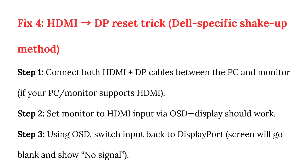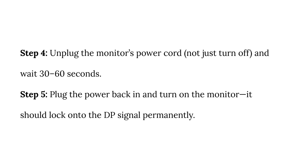The screen will go blank and show no signal. Step four: unplug the monitor's power cord — not just turn off — and wait 30 to 60 seconds. Step five: plug the power back in and turn on the monitor. It should lock onto the DP signal permanently.